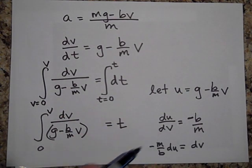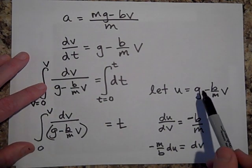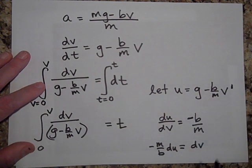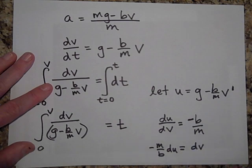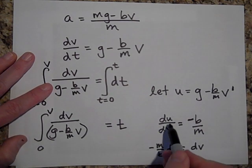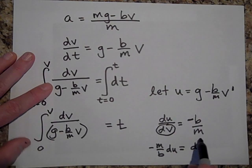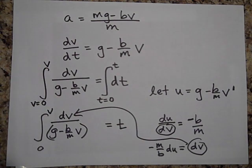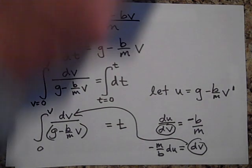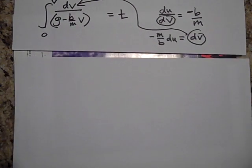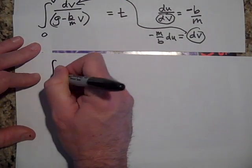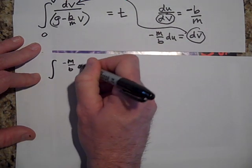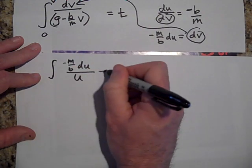To get dv in terms of du, you take the derivative of u with respect to v. The constant term is zero, and the v term is like v to the first power, so that gives negative b over m. I solve for dv, bring that term over, and plug it in. What I get then is negative m over b times du over u, and that equals t.